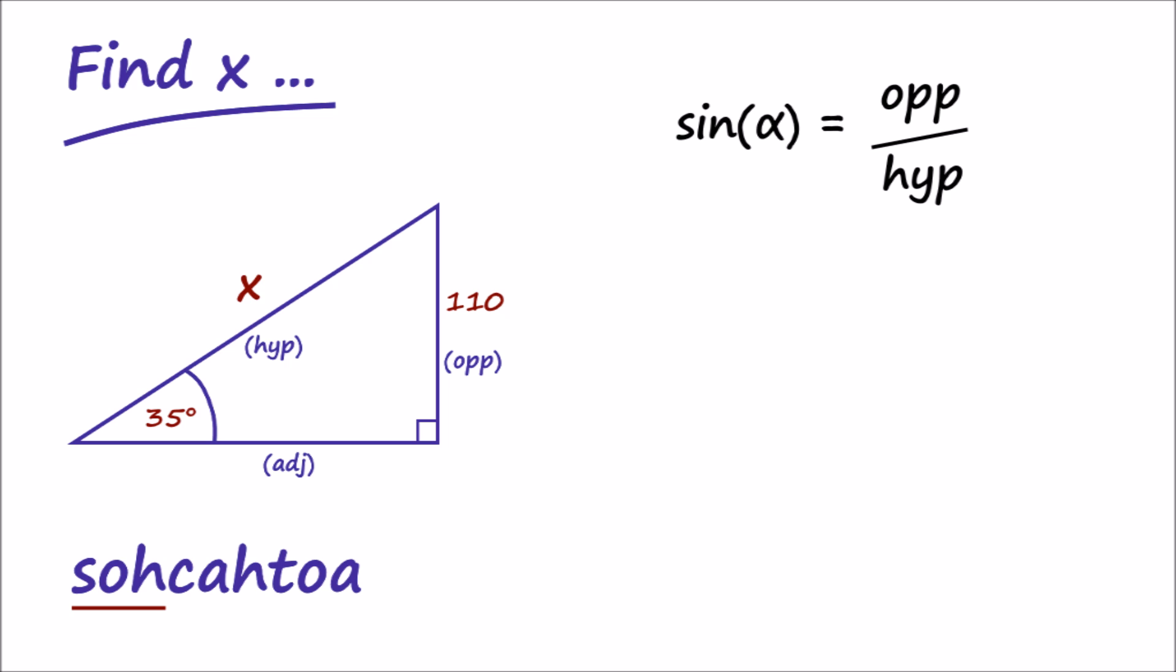Substituting the values for our triangle gives us the sine of 35 degrees equals 110 divided by x. And if we rearrange to solve for x, we get x equals 110 divided by sine 35.